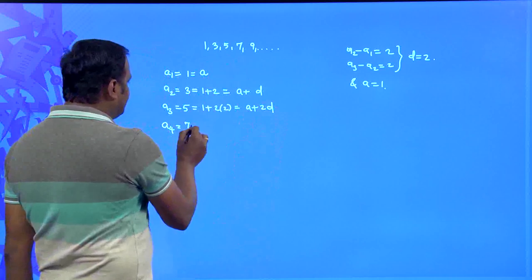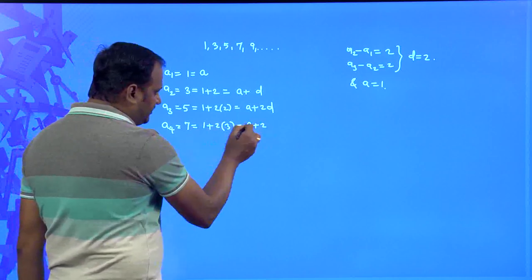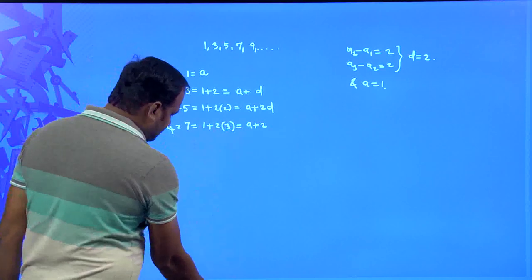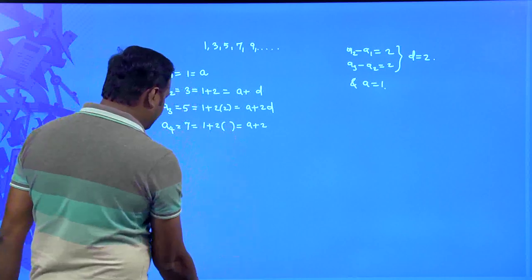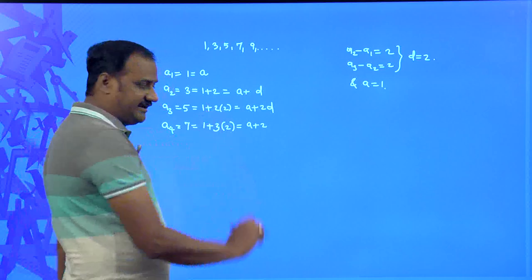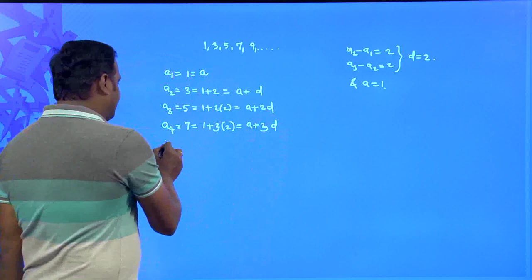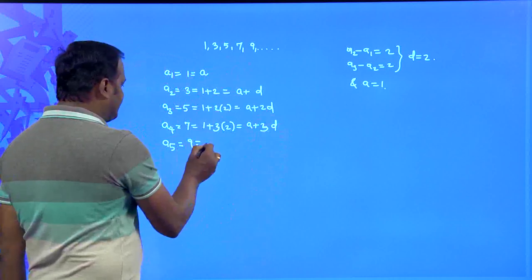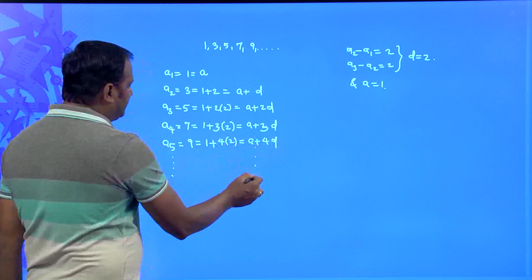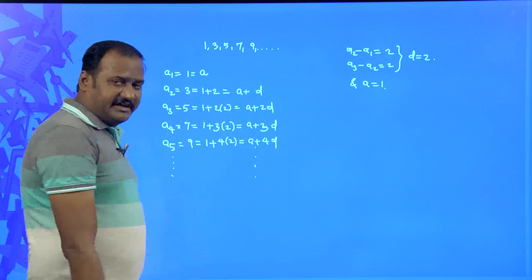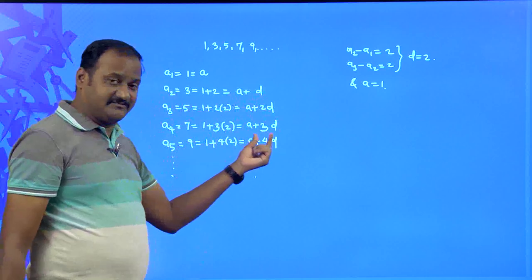The fourth term is 7, written as a plus 3d. The fifth term is 9, which equals 1 plus 4 times 2, that is a plus 4d and so on. Observing the pattern: the first term is a₁ equals a, the second term is a plus 1d, the third term is a plus 2d, the fourth term is a plus 3d, and the fifth term is a plus 4d.